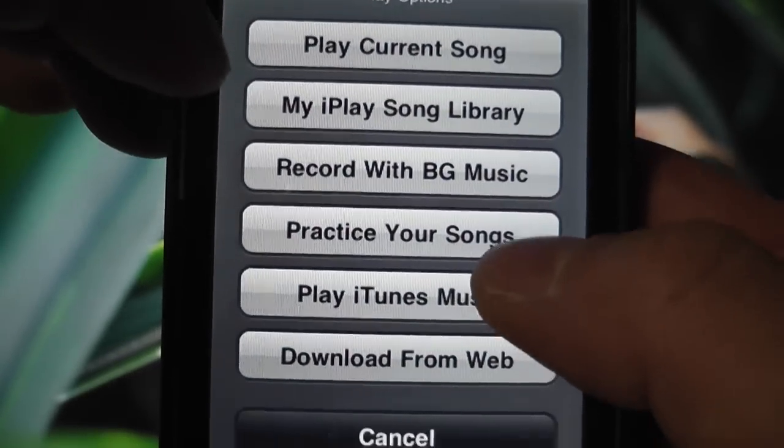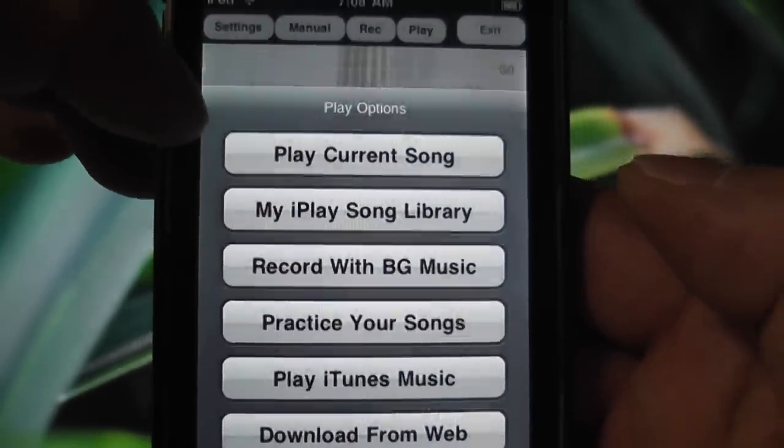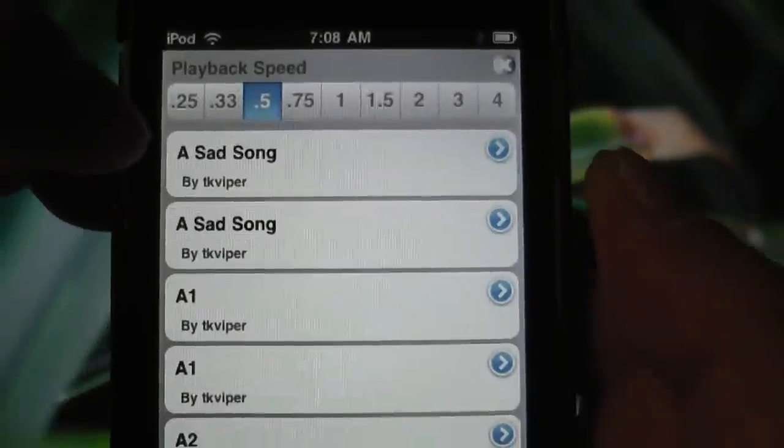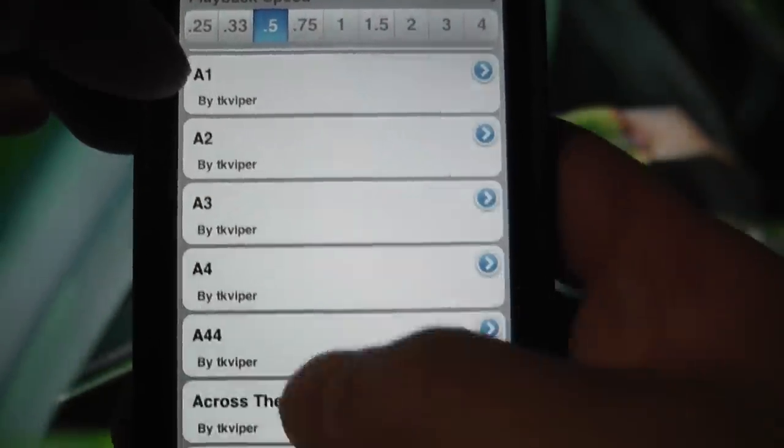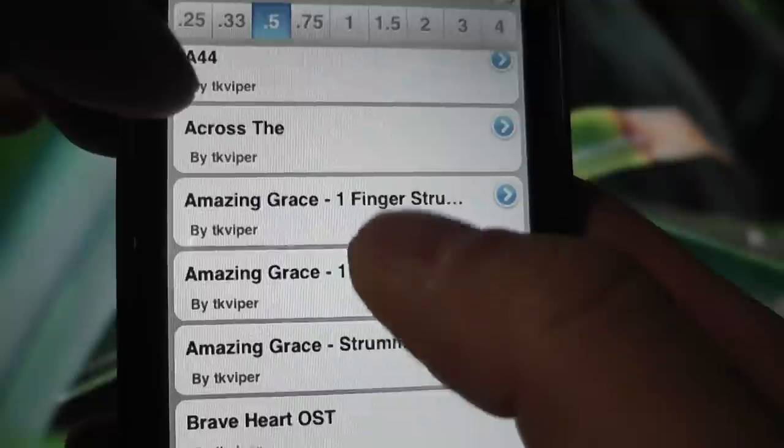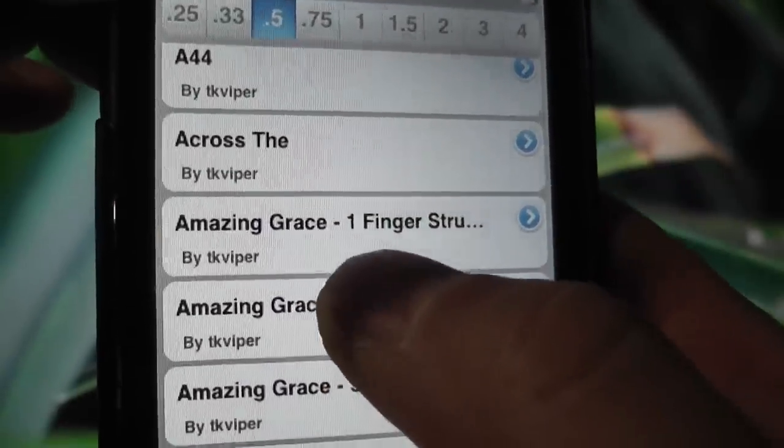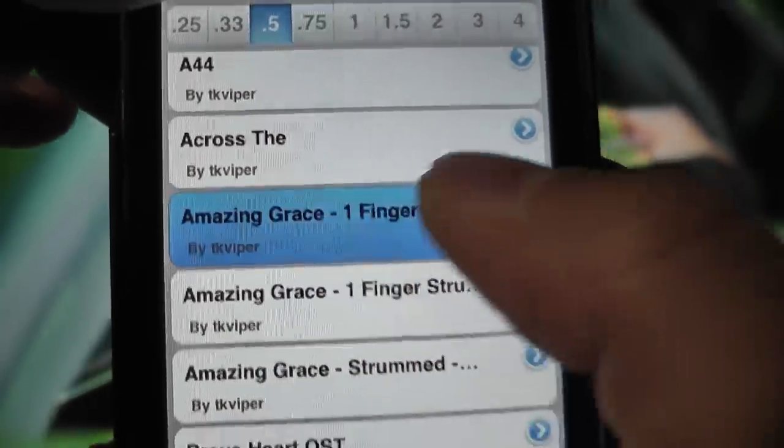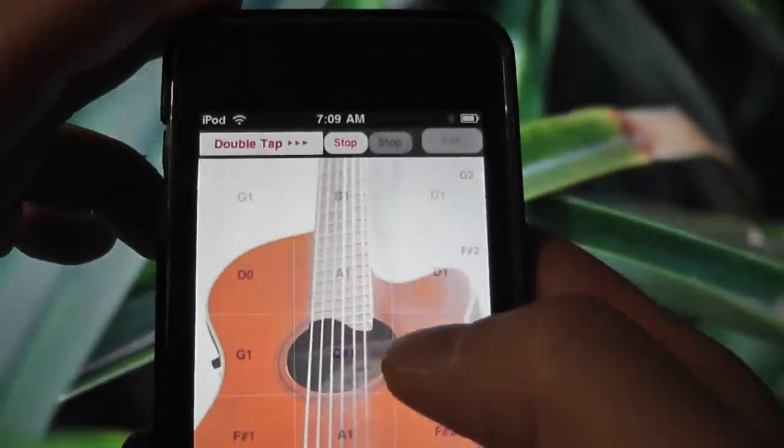And then practice your songs. Tap on that and make sure you set the playback speed slower, like 0.5, half speed, so you can follow the green lights that will come on. So like this, here it's Amazing Grace, one finger strum. So you go like this and just follow the pattern. Just follow the green lights.